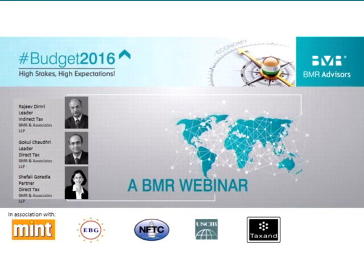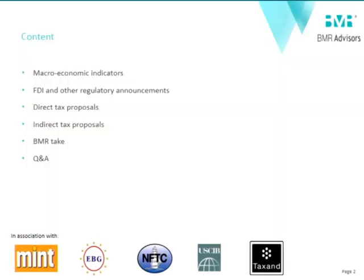Welcome to the BMR webinar on the Union Budget 2016. This is the third budget of Finance Minister Jaitley, and it clearly has a stamp of Prime Minister Modi. Our conversation today will include a brief overview of the macroeconomic indicators, some of the regulatory changes around foreign investment, and nearly 170-odd changes in the Direct Taxes Code. We will cover some of them before moving on to indirect tax proposals, and then a Q&A session. Joining me today is my partner Shefali Ghoradia from Bombay.